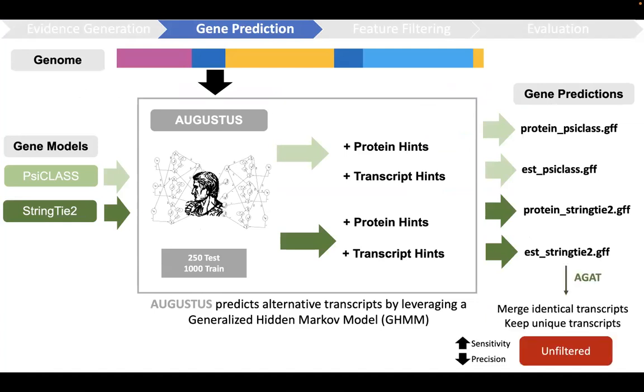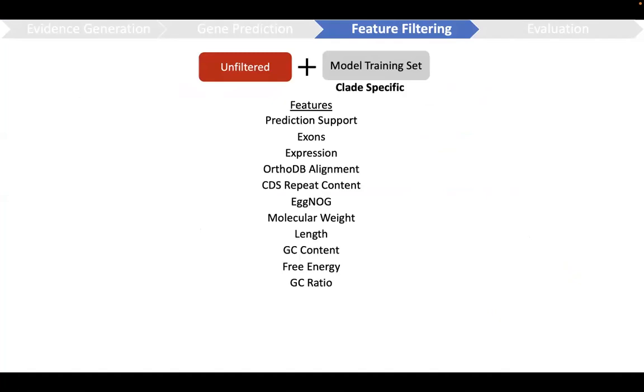Doing so increases sensitivity, but at the expense of precision. So how do we increase precision? We can filter transcripts based on a model training set and a list of features.